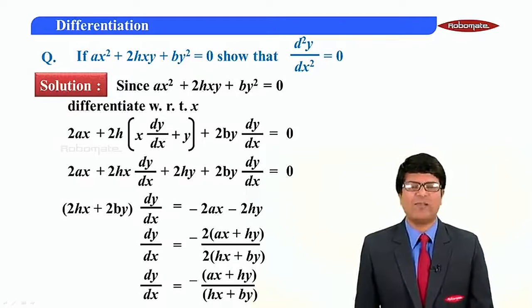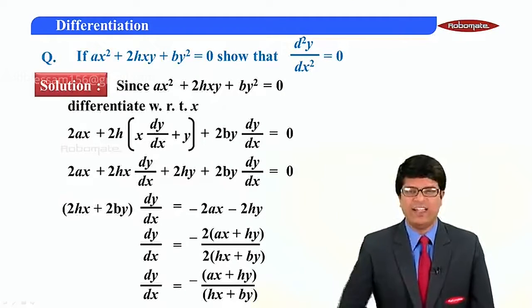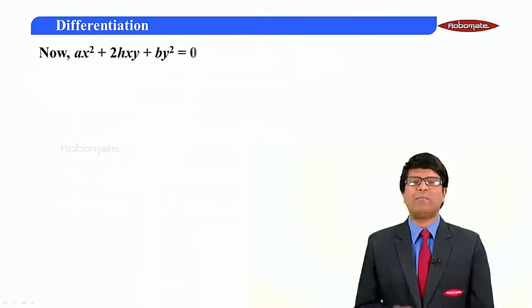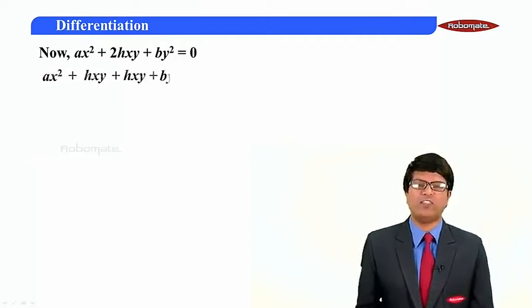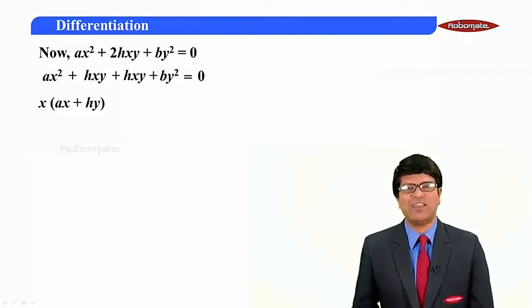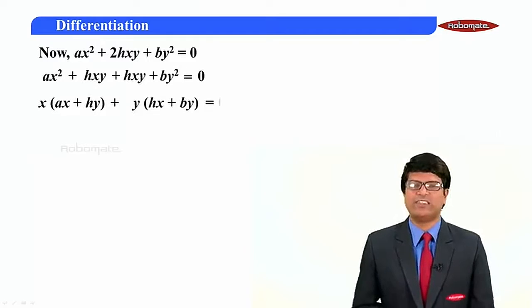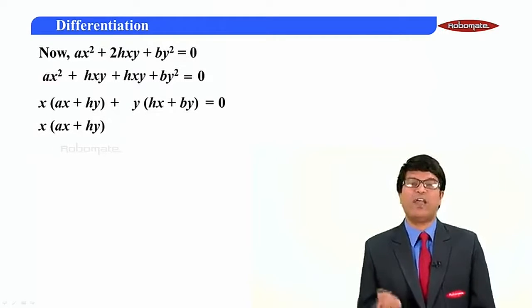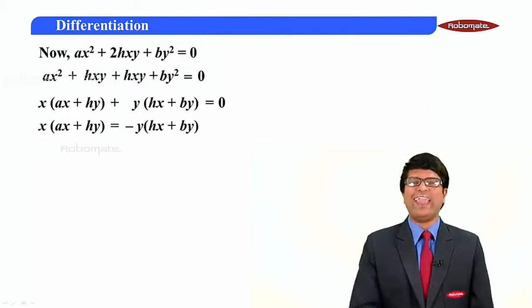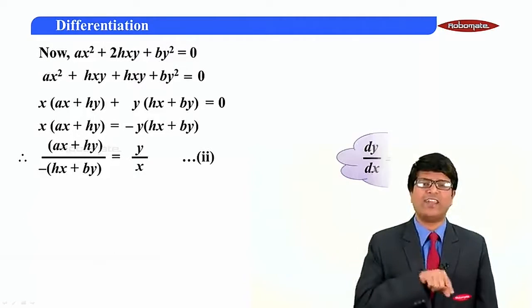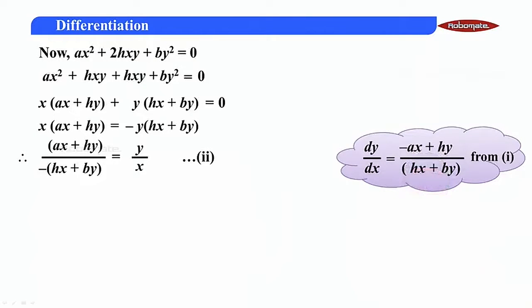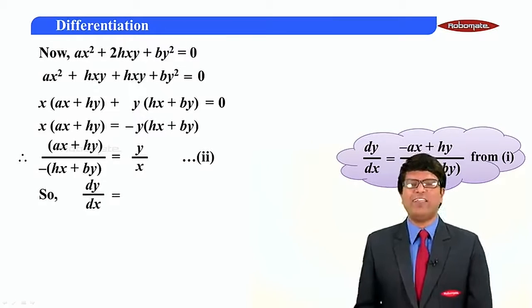Don't differentiate a second time immediately, as it will be too lengthy. Instead, rewrite the original equation: ax² + 2hxy + by² = 0 can be factored as x(ax + hy) equals minus y(hx + by). This gives (ax + hy) upon minus(hx + by) equals y/x. Comparing with step one, dy/dx equals y/x.